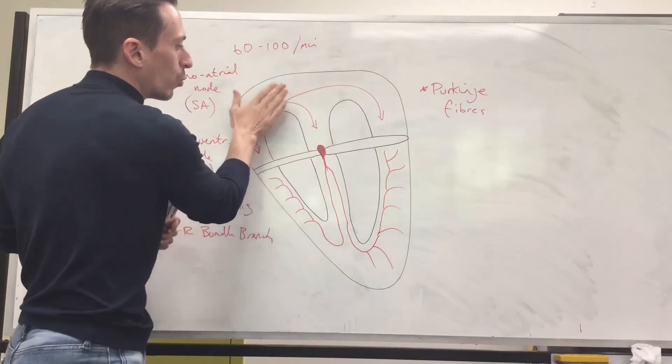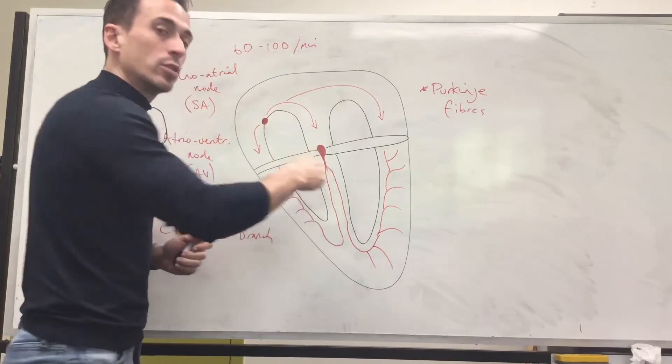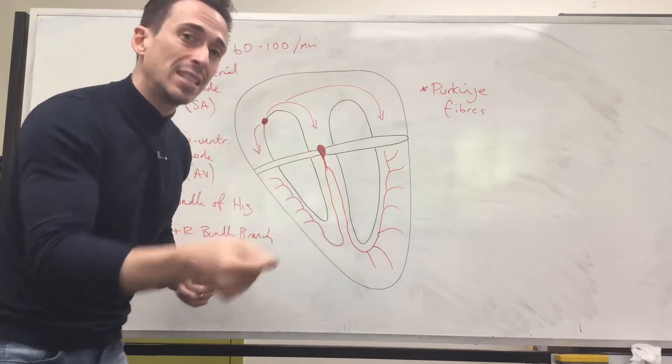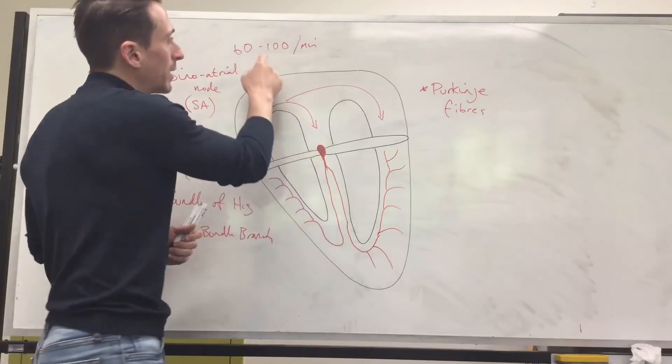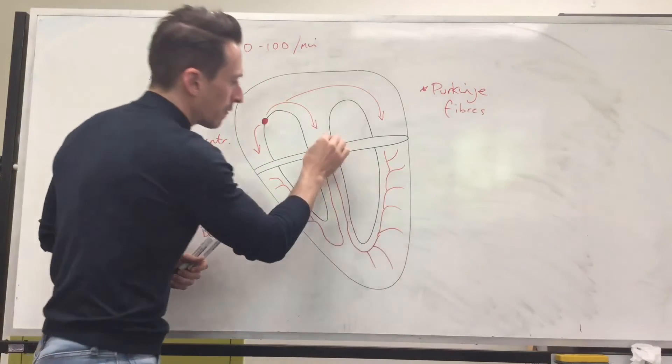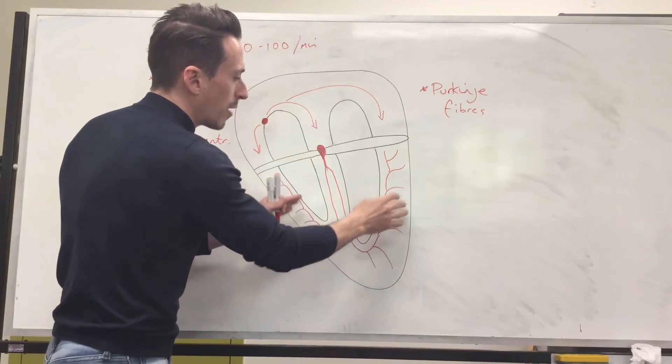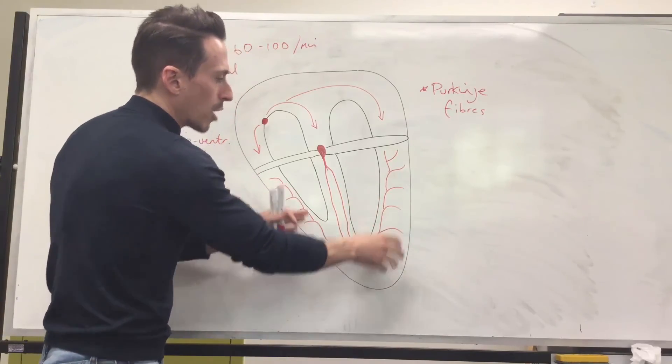The AV node, if the SA node wasn't there, the AV node is also a set of pacemaker cells. And that fires off around about 40 to 60 times a minute. So a little bit less than the SA node. Then it funnels it down the bundle of His. Then the left and right bundle branches.